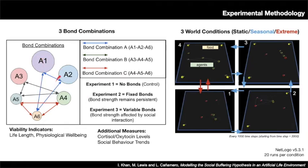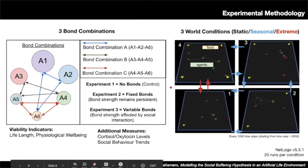In terms of experimental setup, we investigate three different bond combinations related to dominance ranks across three different world conditions related to food resource availability. In the static environment, food resources remain fixed. In the seasonal environment, food incrementally goes from four resources to three, to two, to one, then back up to two, three, four — replicating seasons. The extreme condition goes from four food resources immediately to one resource every thousand time steps.